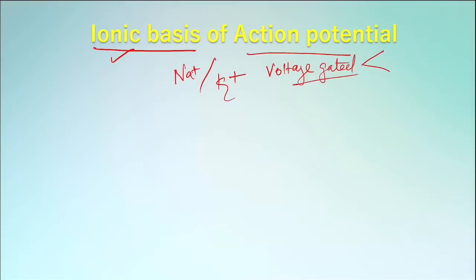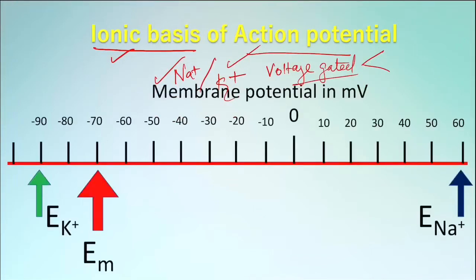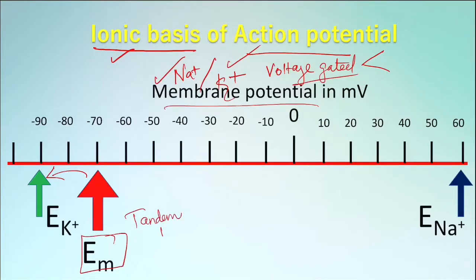The permeability of sodium and potassium are altered by opening and closing of voltage-gated channels, resulting in depolarization and repolarization. Resting membrane potential is close to the equilibrium potential of potassium since the tandem pore, or two-pore potassium channels, are open even at resting state. They are also called leaky potassium channels. They are not voltage-gated and they are responsible for the negative membrane potential at rest.